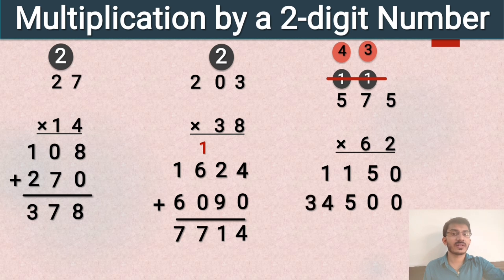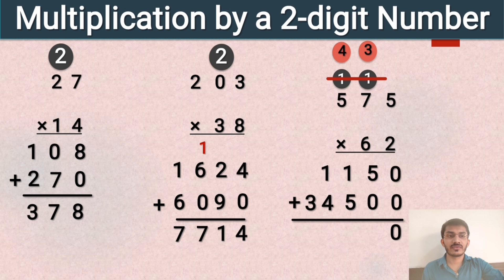Now we add 1150 and 34500. 0 plus 0 is 0, 5 plus 0 is 5, 1 plus 5 is 6, 1 plus 4 is 5, and 3 plus 0 is 3. So 575 multiplied by 62 is equal to 35650.